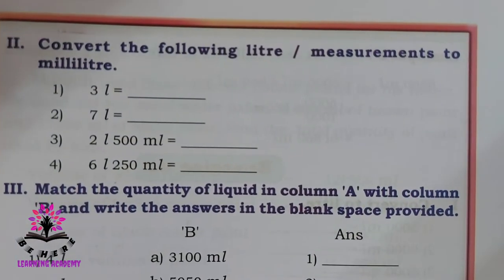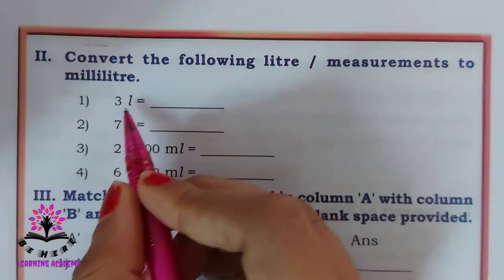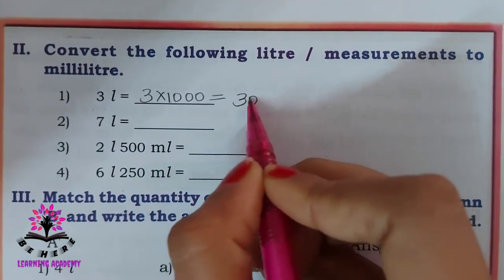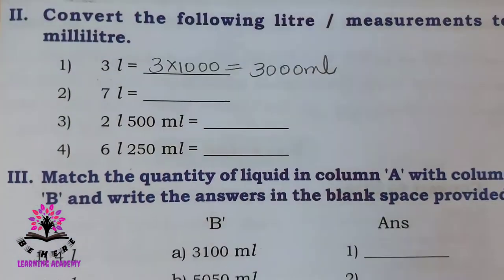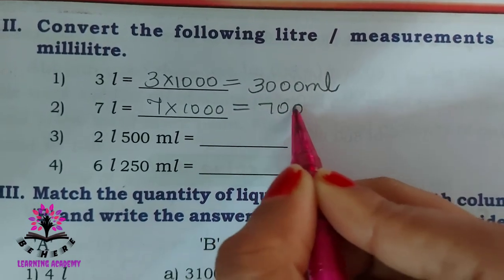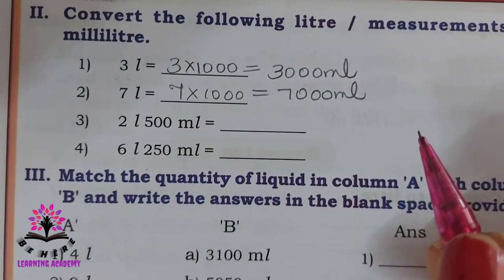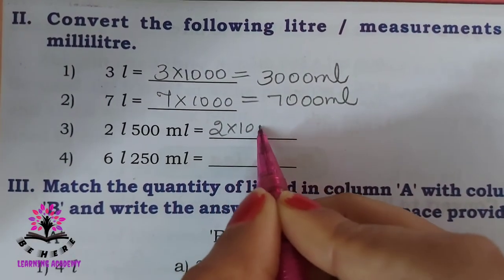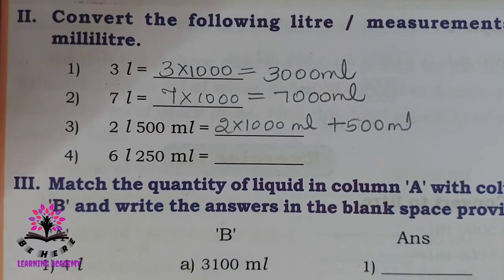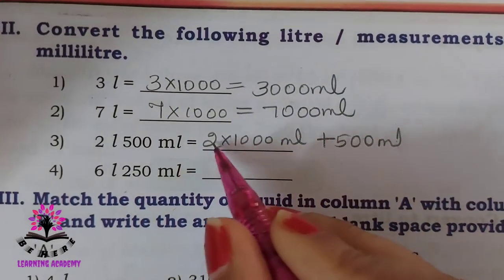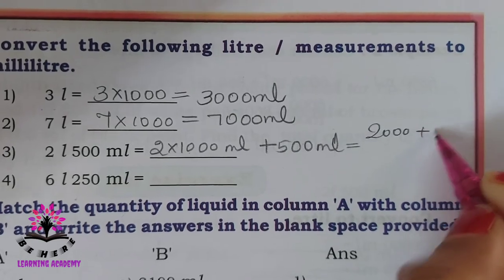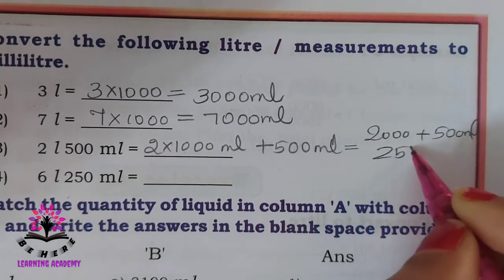Convert the following liter measurements to milliliters. 3 liters = 3 × 1000 = 3000 ml. 7 liters = 7000 ml. 2 liters 500 ml: 2 × 1000 ml + 500 ml = 2000 + 500 = 2500 ml.